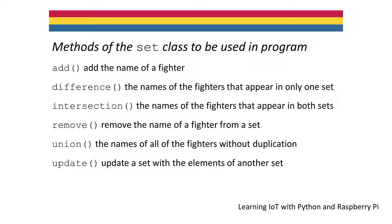We'll use the Add method to add the name of a fighter, the Difference method to determine the names of the fighters that appear in only one set, the Intersection method to determine the names of the fighters that appear in both sets, the Remove method to remove the name of a fighter from a set, the Union method to determine the names of all fighters without duplication, and the Update method to update a set with the elements of another set.